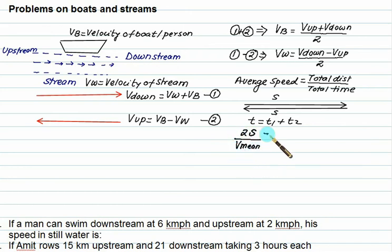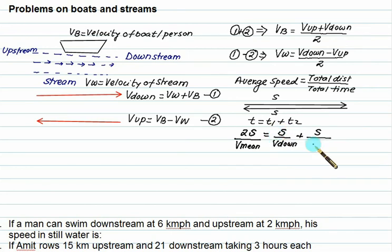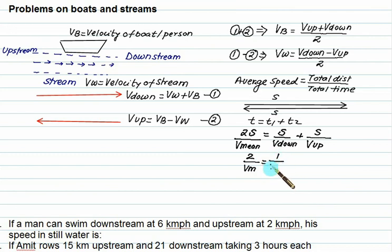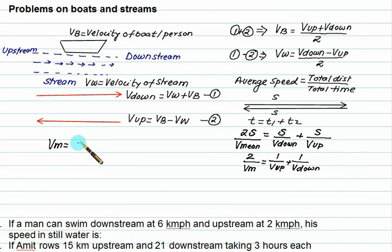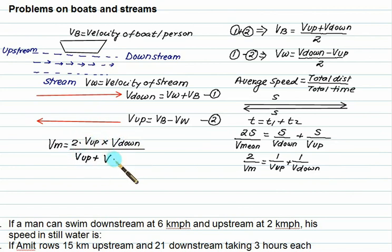Average speed equals S divided by velocity of upstream plus S divided by velocity of down. The S terms cancel, giving 2 divided by 1/Vup plus 1/Vdown. Therefore, the mean velocity equals 2 times velocity of up times velocity of down divided by velocity of up plus velocity of down. This Vb is the speed of the boat in still water — remember, this is with respect to still water.